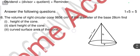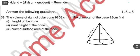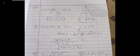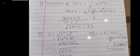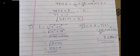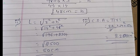Last main question: the volume of a right circular cone is 9856 cm³ and the diameter of the base is 28 cm. Find the height, slant height, and curved surface area. Diameter = 28 cm, so r = 14 cm. Using volume = (1/3)πr²h: 9856 = (1/3)(22/7)(14²)h, solving gives h = 48 cm. Slant height l = √(r² + h²) = √(196 + 2304) = 50 cm. Curved surface area = πrl = (22/7) × 14 × 50 = 2200 cm².